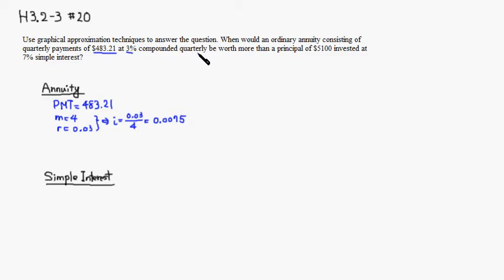So we have that. And let's see, quarterly payment, so the other one is a simple interest. Simple interest, and principal P is given as 5,100. So 5,100, and interest R is 7%, so it's 0.07.